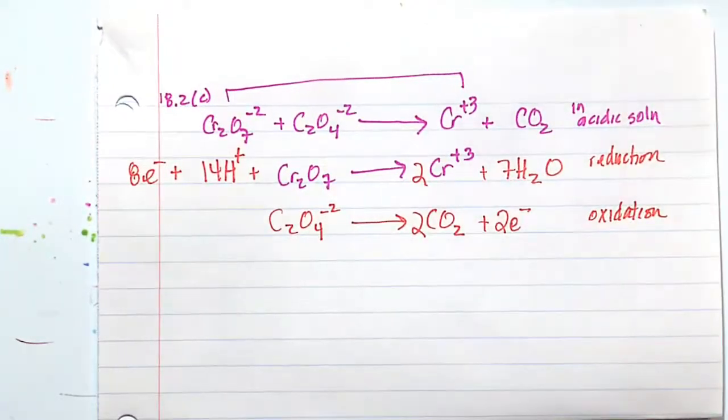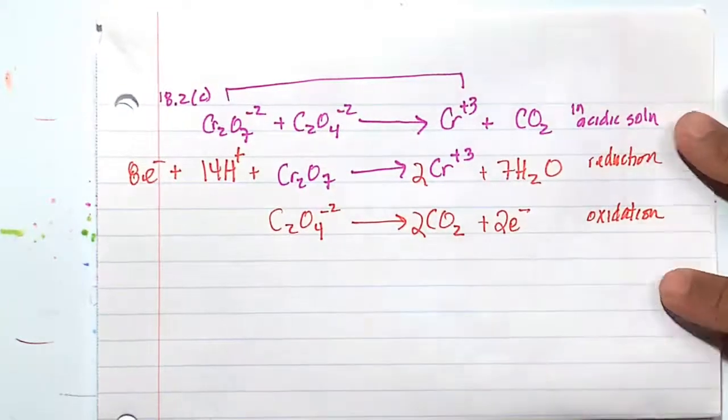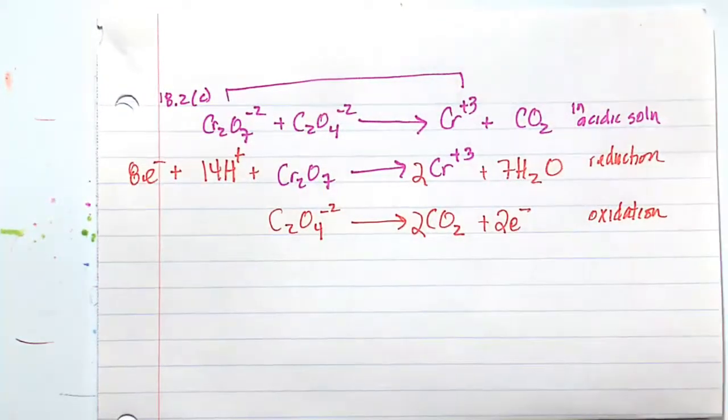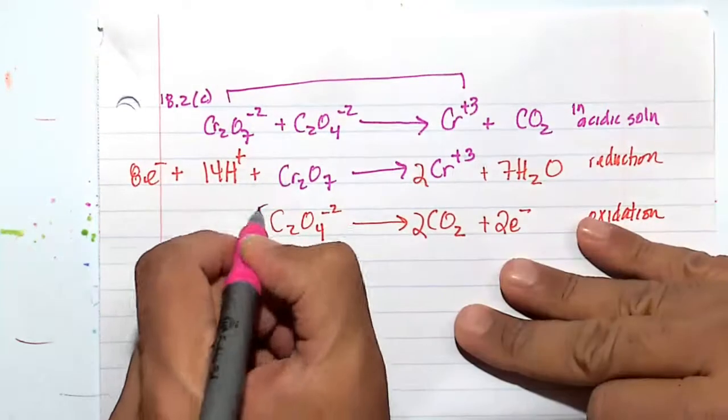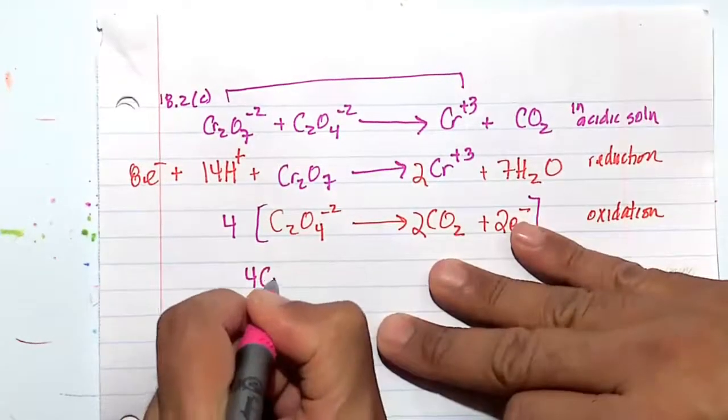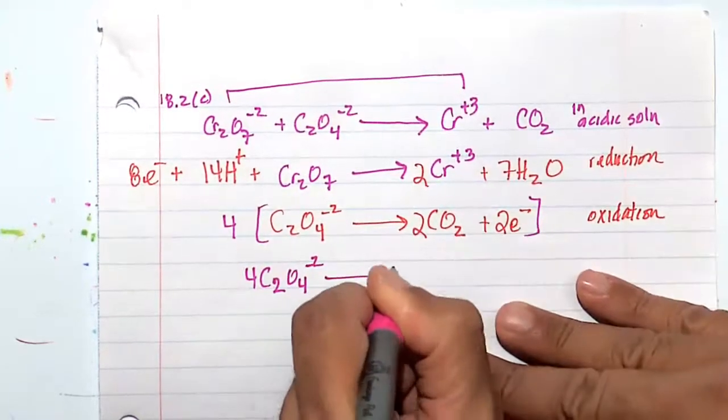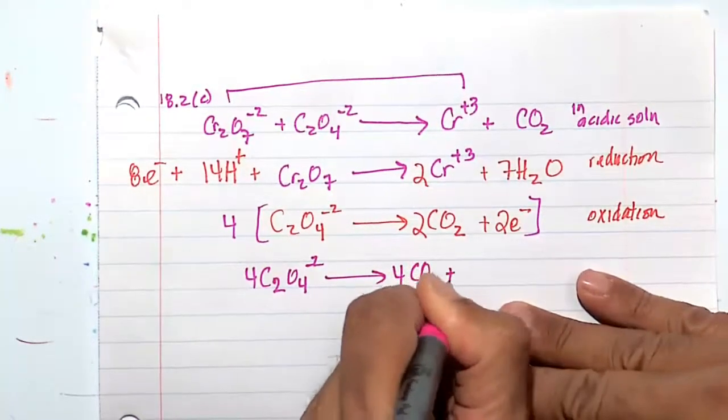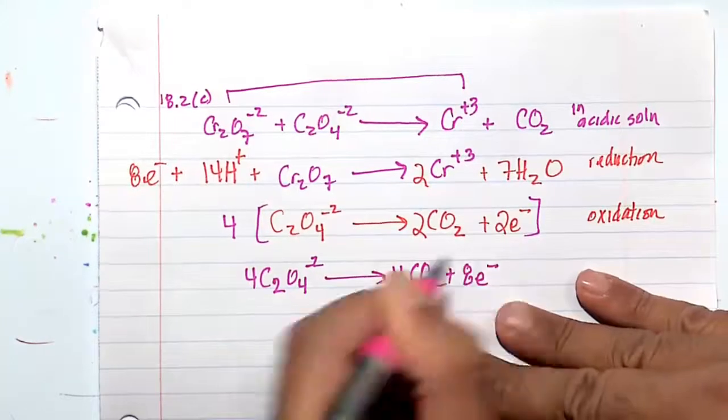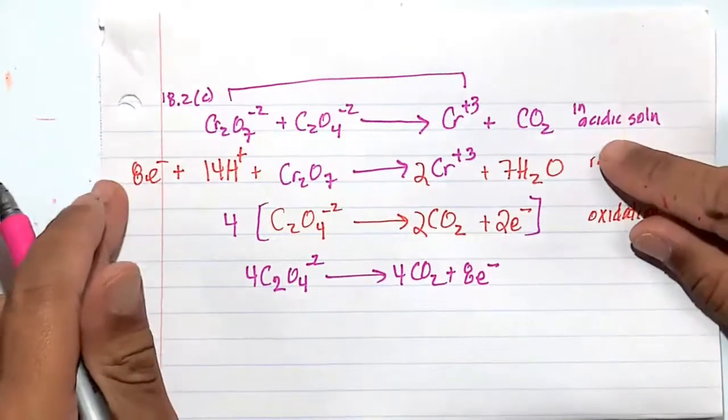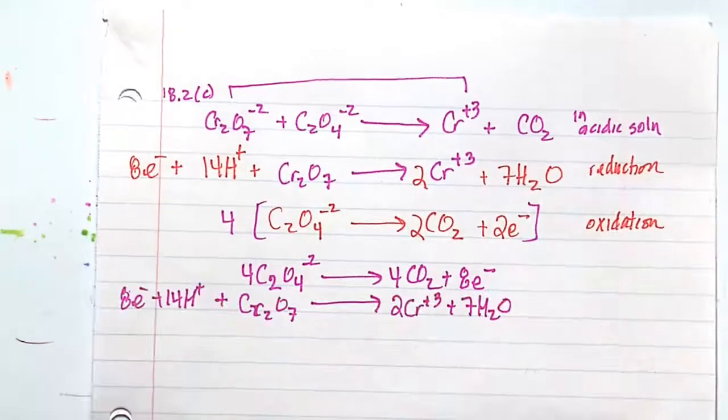So let's multiply this bottom half reaction by 4. In so doing, we will have 4C2O4 minus 2 going to 4CO2 plus 8E minus. I'm going to go ahead and rewrite this bottom half reaction.